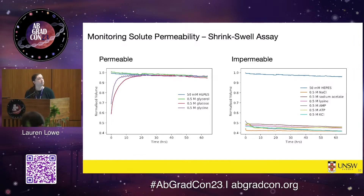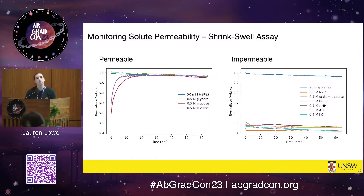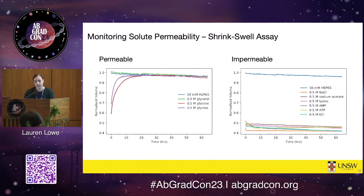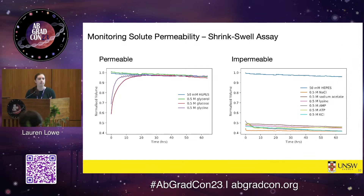On the left we can see some examples of permeable solutes. Our control — 50 mM HEPES in blue — is a flat line, which is expected since no volume change is anticipated. When we mix vesicles with glucose or glycine, we see that characteristic curve telling us volume is actually increasing after the vesicles initially shriveled up. This tells us both solutes are permeable, and glycine is more permeable than glucose because it increases at a faster rate. I also have glycerol on that plot — at first glance it looks like nothing happens, but glycerol is known to be super permeable across lipid bilayers, so I likely missed the initial shrinkage and swelling stage.